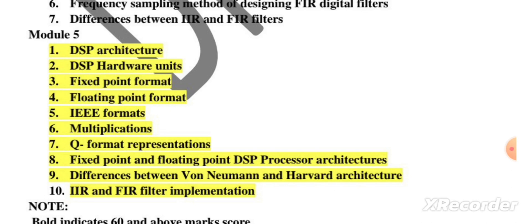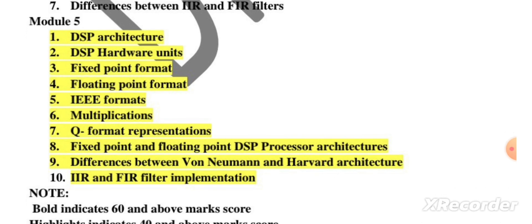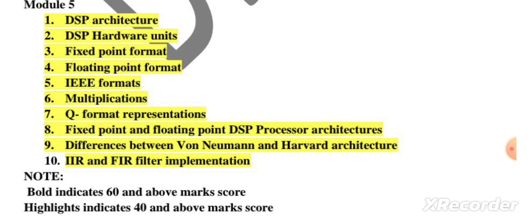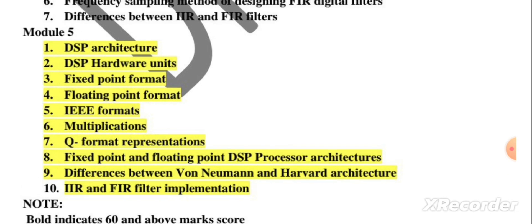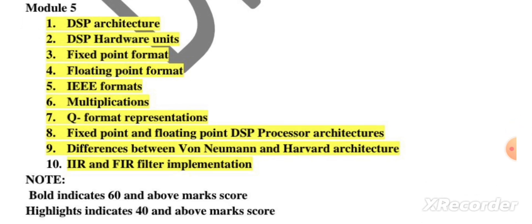Then you may get IEEE formats, multiplications, and Q format representations. Fixed point and floating point DSP processor architectures. Differences between von Neumann and Harvard architecture. IIR and FIR filter implementation. Here you can easily expect one architecture diagram question.